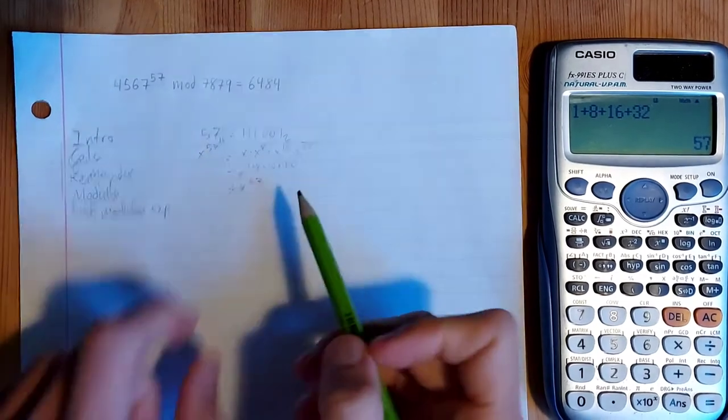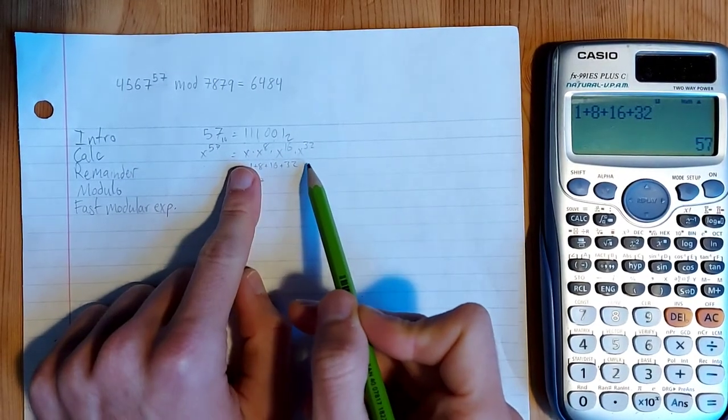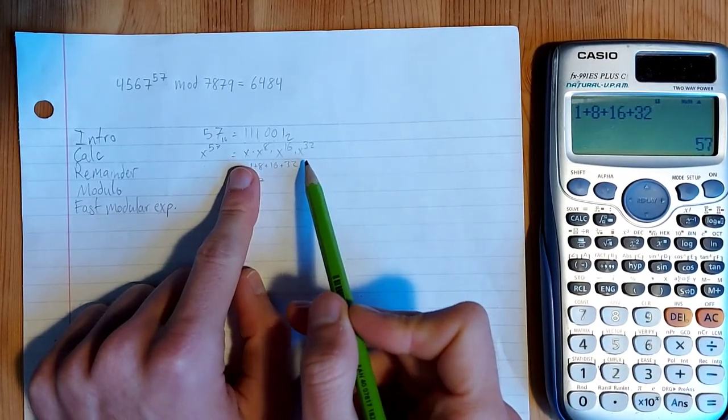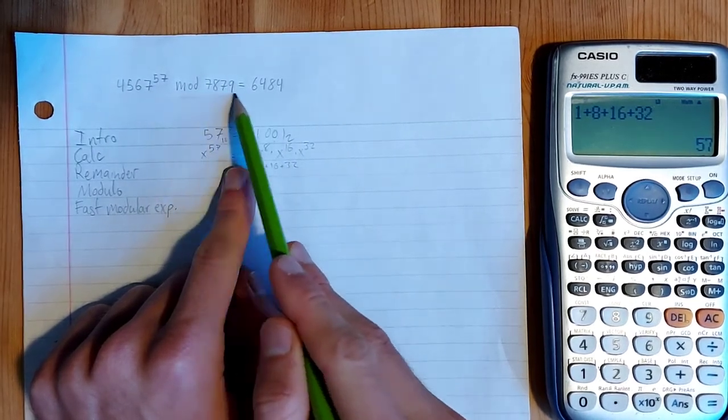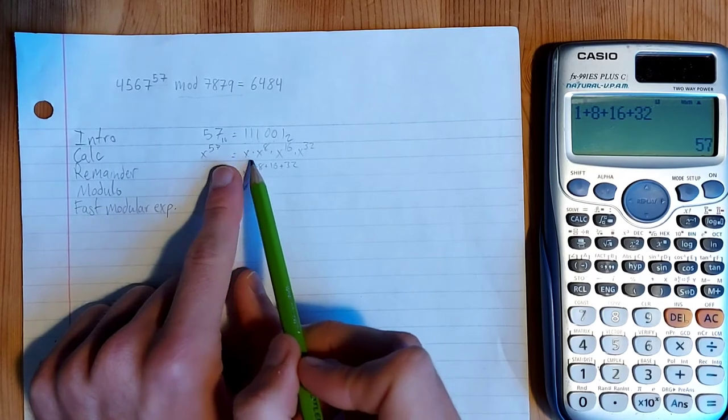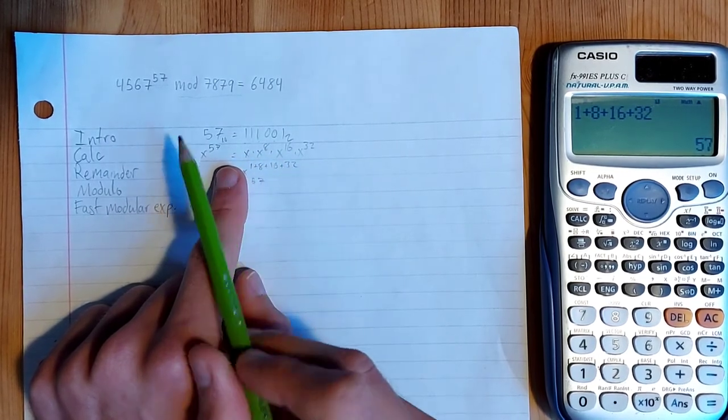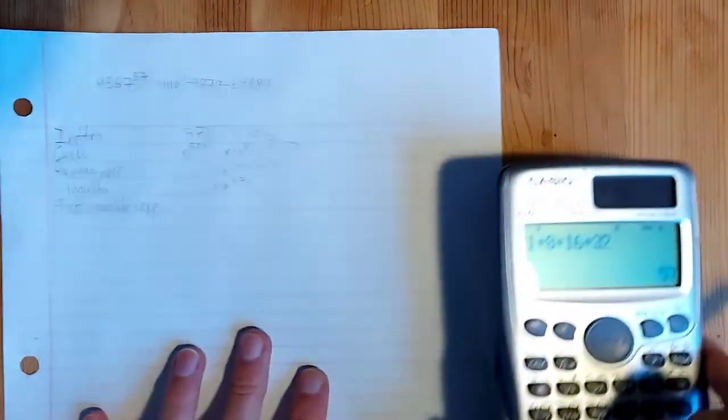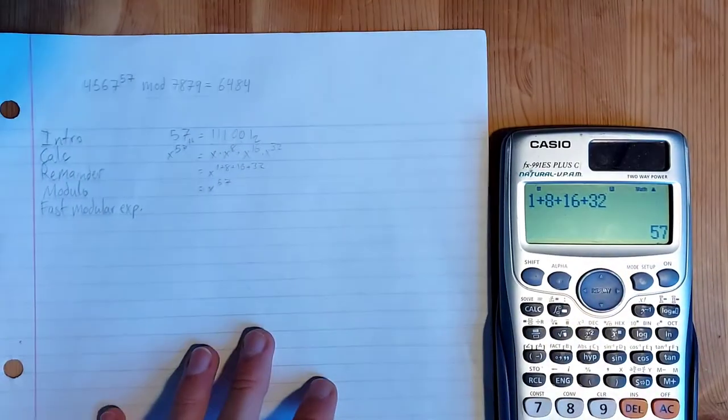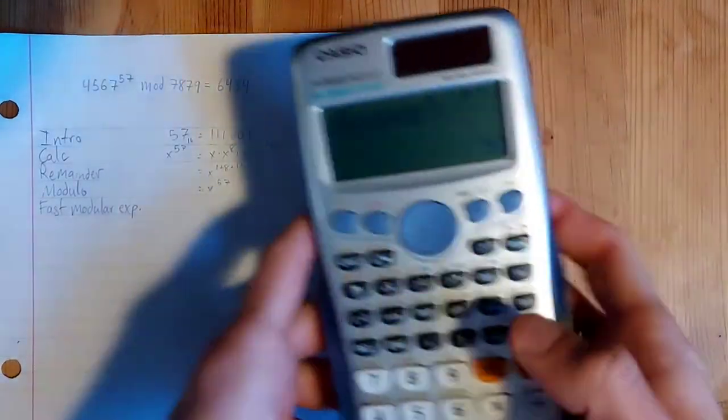And so now we just have to determine what these are. And because we're doing the exponentiation mod this number, we can take all of these intermediate results mod 7879. And so we can do that really quickly using the calc functionality on this calculator. So I'm going to start by typing in a equals, and then I'll put the same thing which we did before with one modification.